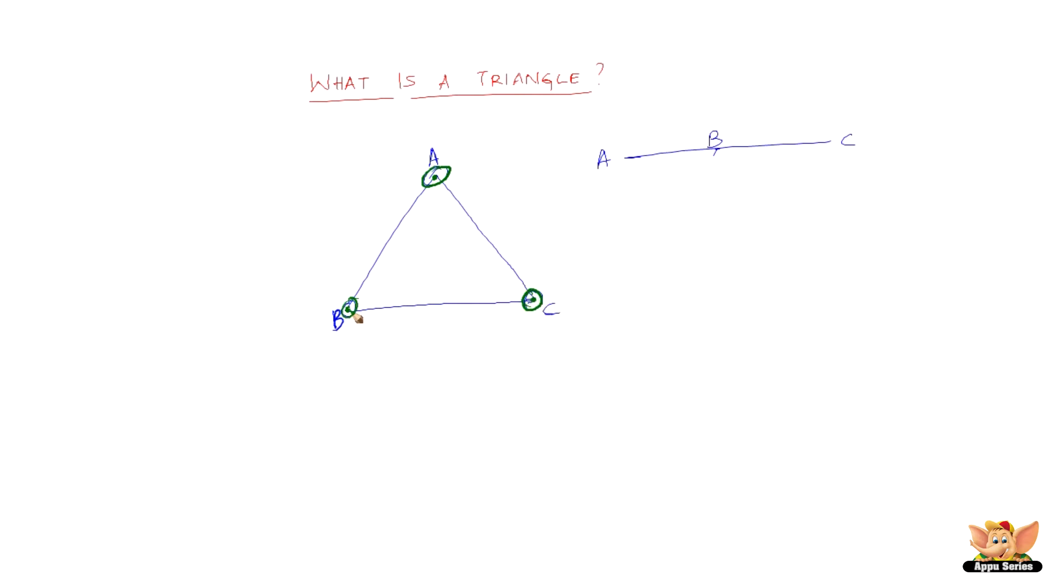The segments AB, BC and CA are called the sides of the triangle. This is called a side, so is this, and also this. All these are called sides of the triangle.